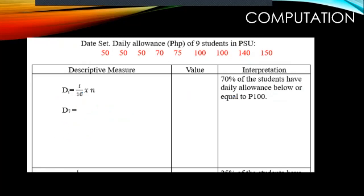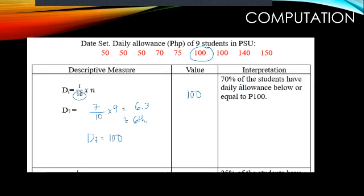For decile, the denominator is always 10 and the subscript i ranges from 1 to 10. To find the 7th decile: (7/10) × 9 = 6.3, which rounds to the 6th value. The 6th value in the arranged data is 100. Interpretation: 70% of the students have daily allowance below or equal to 100.